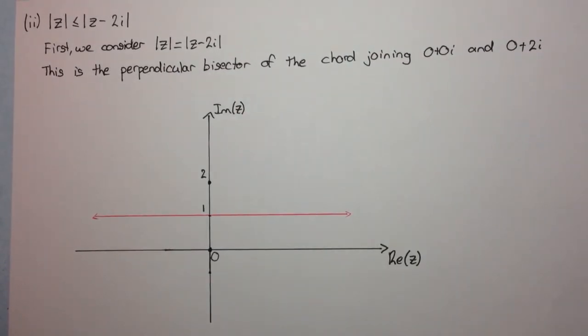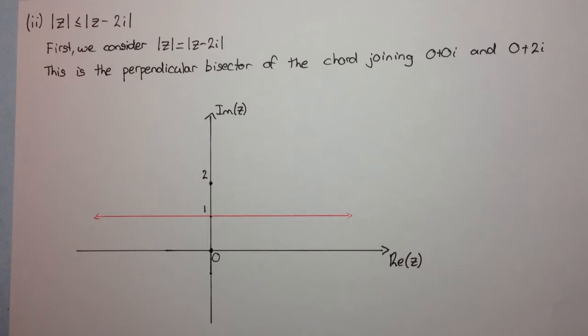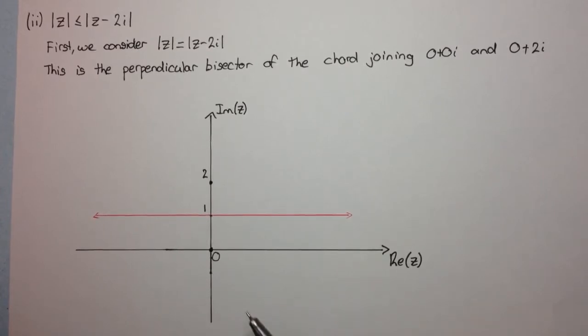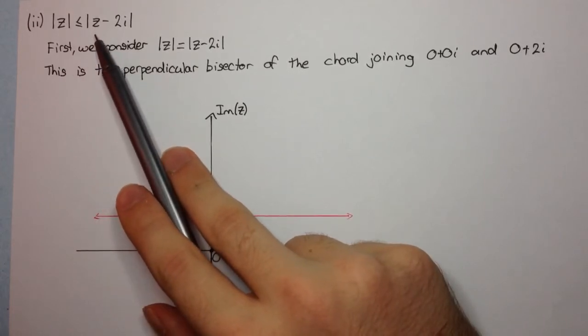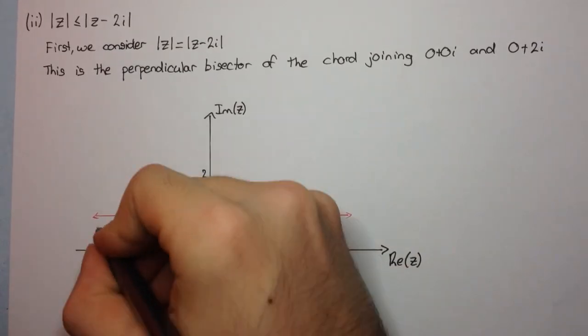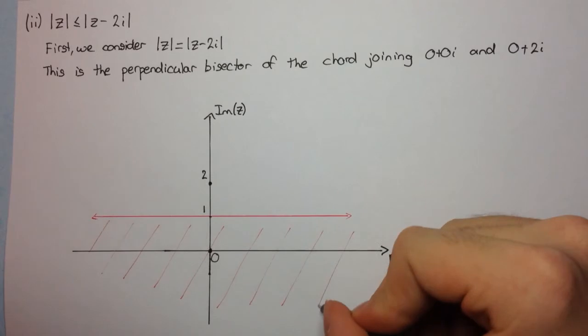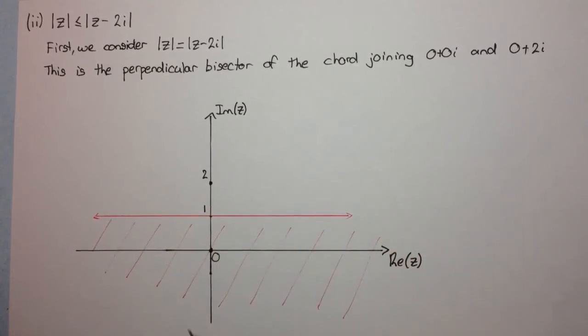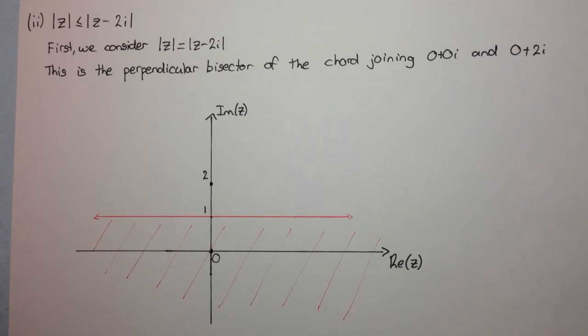Now this is only for the equality case. In our original question, we have the modulus of z is less than or equal to the modulus of z minus 2i. And so, in this case, instead of being a curve in the Argand diagram, it is now a region in the Argand diagram. The locus of z is all the points such that their distance from the complex number 0 plus 0i is less than the distance from the complex number 0 plus 2i. And so this is of course all these points in this region. And we include this line here, which we have a complete line, a full line, because it's also less than or equal to. So, this is the equal to case, and all these points here are the less than case.